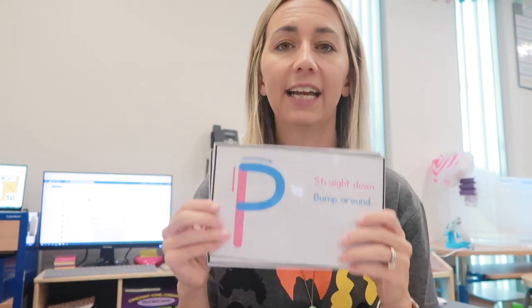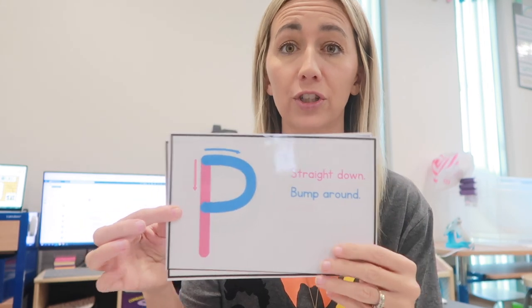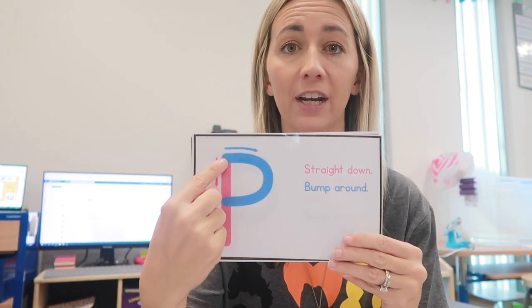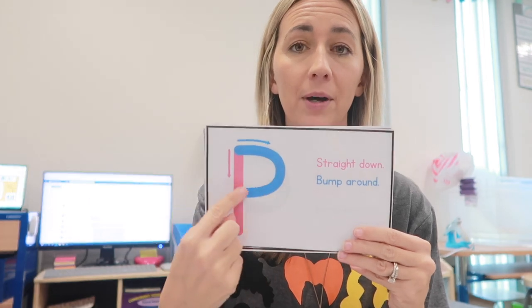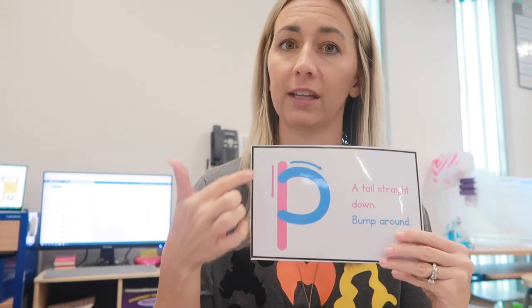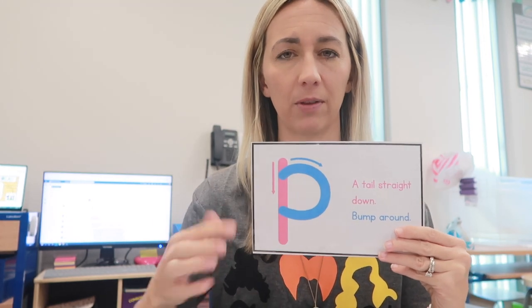After that we talk about how to write the letter P, and it has cute cards with little songs. I take my finger and trace it: 'straight down, bump around.' I give it to each kid and we rotate through — straight down, bump around. Then we do the lowercase P. I talk about how they look similar: the uppercase versus lowercase difference is 'a tail — straight down because it goes below the line, bump around.' Then they all traced it.